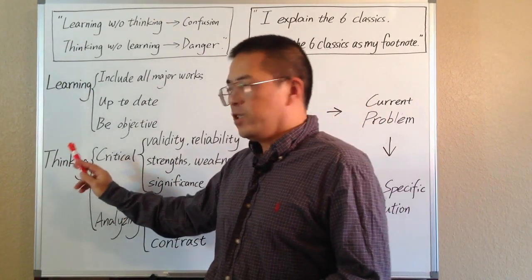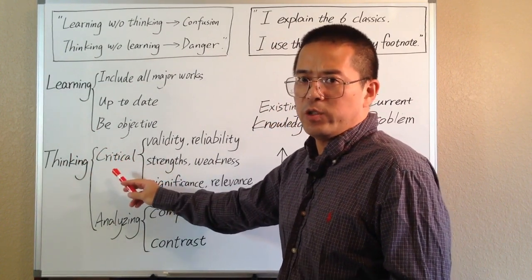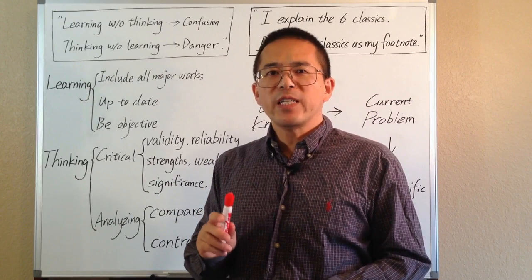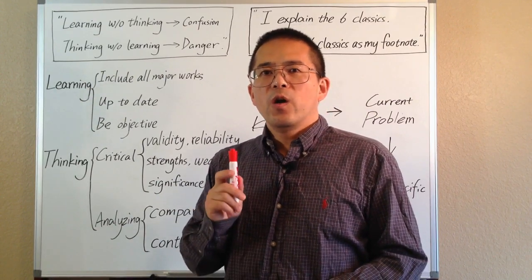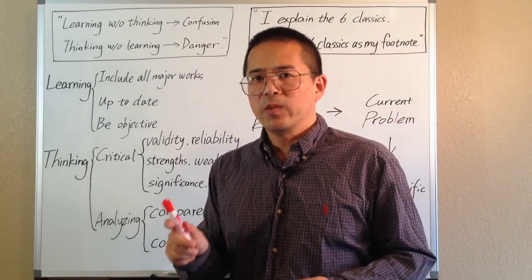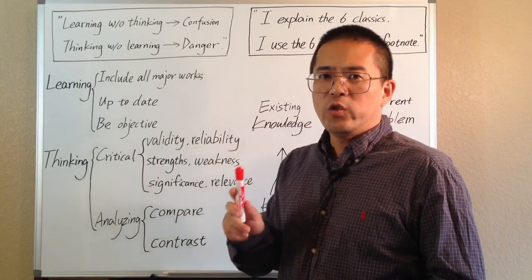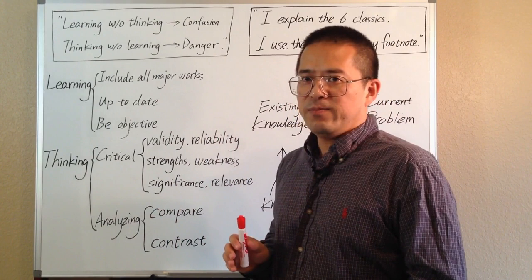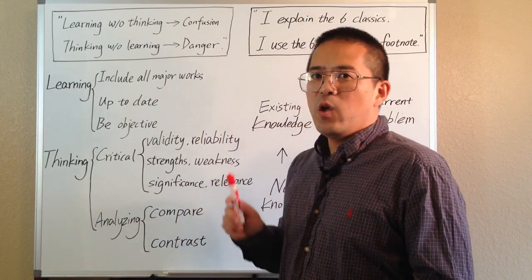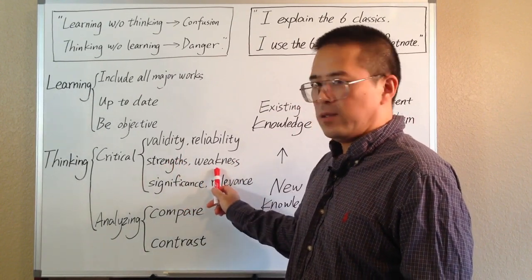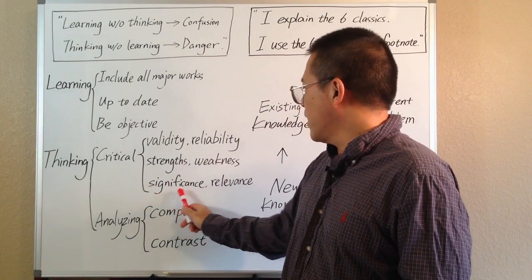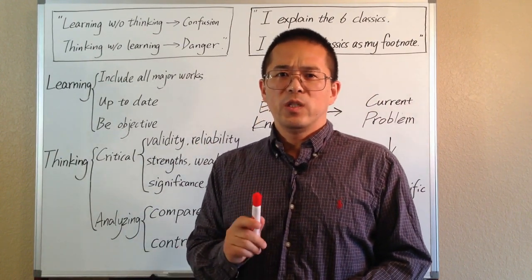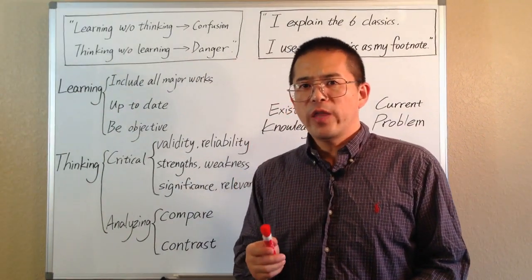In the thinking part, first we need to apply critical thinking when we select information from the literature to include in our review. It is important to maintain an attitude of skepticism. Because all scientific findings are tentative and can be incorrect, we should treat all results from the literature as potential evidence for our argument. Before using them, we should check the validity and reliability of these results. Also, there are no perfect studies — each has its own limitations. We may need to evaluate their strengths and weaknesses, and finally decide their significance and relevance to determine how we should use them in our review.